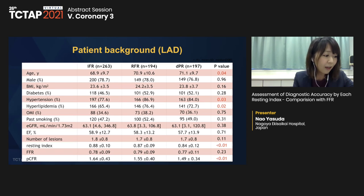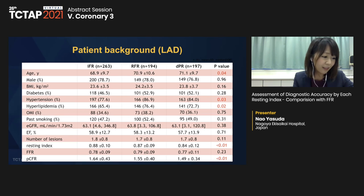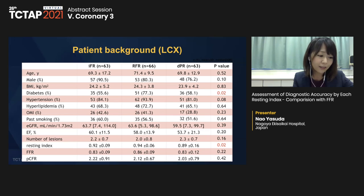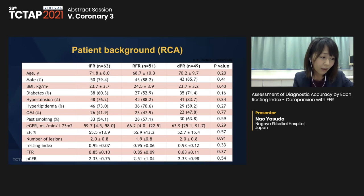Study design was a single-center retrospective cohort study. A total of consecutive 1,008 lesions were enrolled who underwent both FFR and resting index measurement due to stable angina from September 2014 to October 2020. We divided lesions by coronary vessel and assessed correlation between each resting index and FFR, then analyzed diagnostic ability using receiver operating characteristic curves. iFR group had slightly less medical history in LAD regions. RFR group had diabetic patients somewhat more in LCX regions.